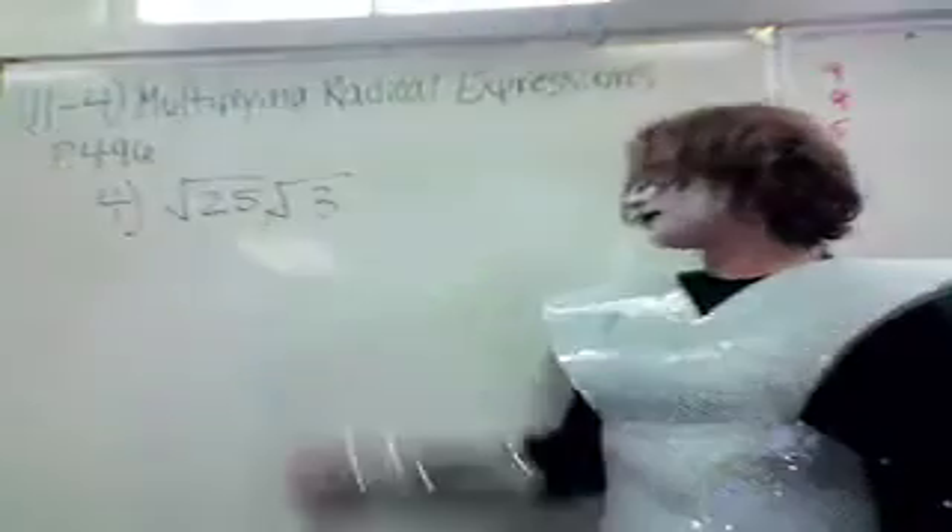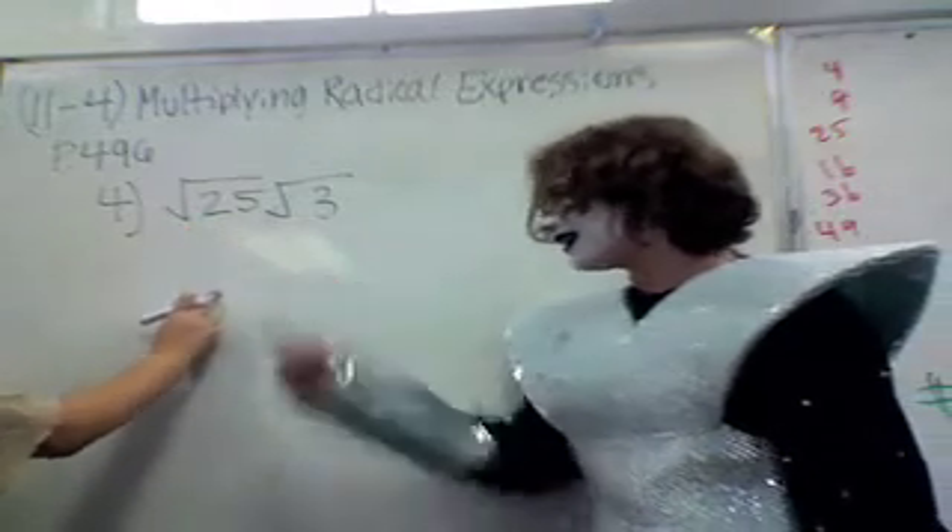Okay, square root of 25 times the square root of 3. And it says multiply in the directions. All you've got to do is 25 times 3. Yeah, you can reduce this. You're multiplying. It's math of Kiss, not Glenna.